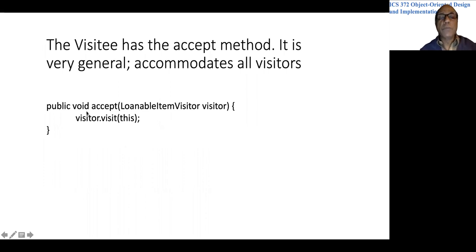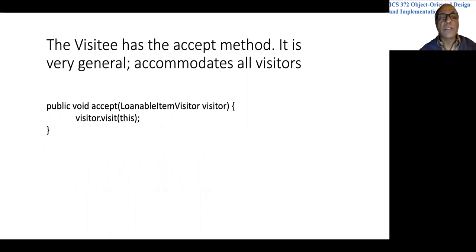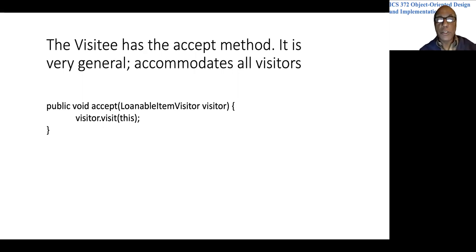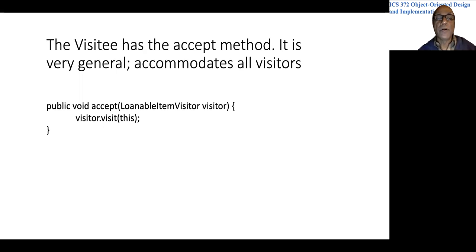The second thing you do is put in every class in the hierarchy this method: public void accept(LoanableItemVisitor visitor) { visitor.visit(this); }. You put this in the superclass and in every subclass of the hierarchy. That is what you need to do at the time of implementing the original system.